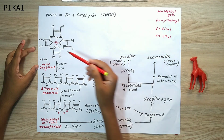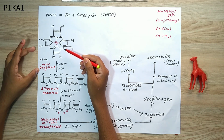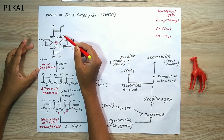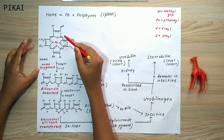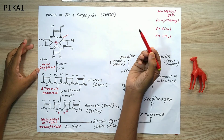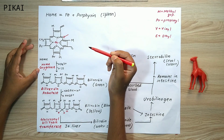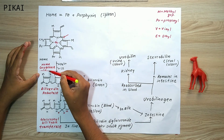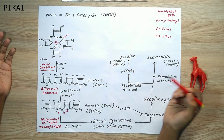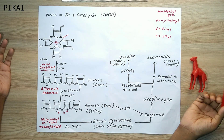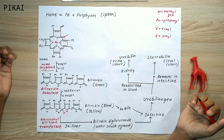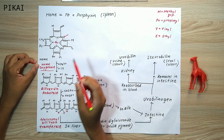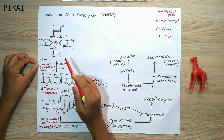Starting with heme degradation, the first event is the oxidation of heme by the enzyme heme oxygenase. The oxygenase class of enzymes oxidizes their substrate using molecular O2. The oxidation takes place at a specific site on the porphyrin ring, releasing a carbon atom that is oxidized to carbon monoxide.